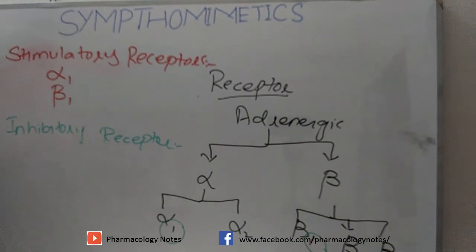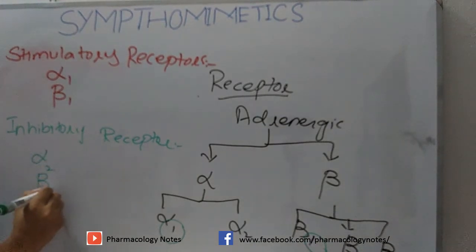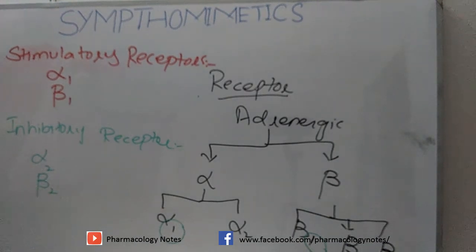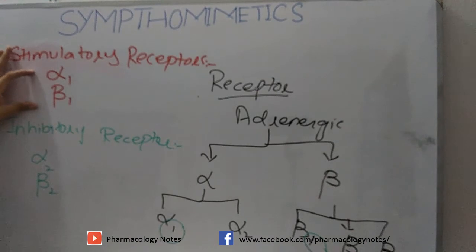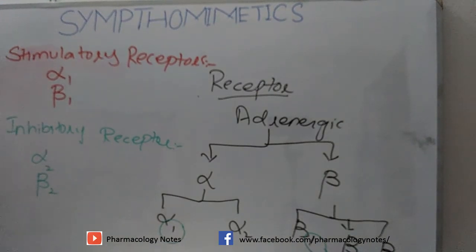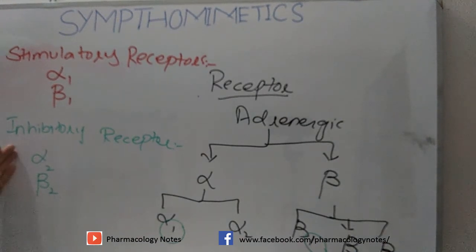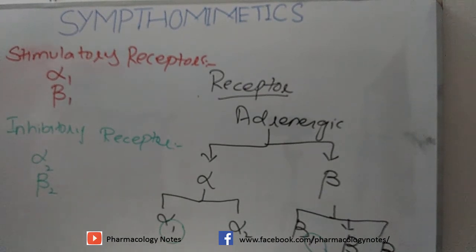The inhibitory receptors are alpha-2 and beta-2. So all those organs in the body which have stimulatory receptors — alpha-1 and beta-1 — will be stimulated during sympathetic outflow, and all those organs having alpha-2 and beta-2 will be inhibited during sympathetic outflow.